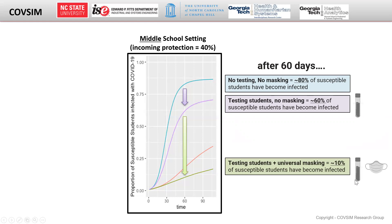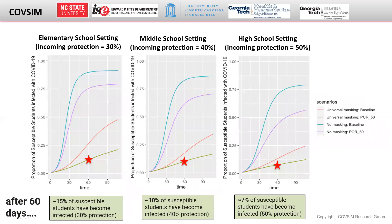The impact of masking is even more profound. If, along with testing students, the school implemented universal masking, total infections are estimated to decrease all the way to 10% of susceptible students. Disease spread is also dependent on the amount of incoming protection. For the scenario we just discussed, the percentage of susceptible students who become infected increases to 15% when only 30% have incoming protection, and decreases to 7% if up to 50% have incoming protection.